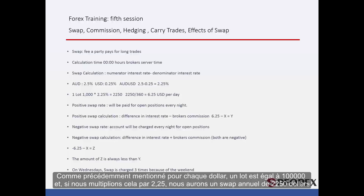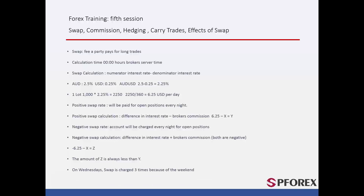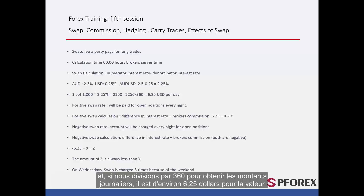As we mentioned before, for every dollar, one lot is equal to 1,000, and if we multiply that by 2.25, we will have an annual swap of $2,250. And if we divide that number by 360 to indicate daily amounts, it is approximately $6.25 of swap interest value that will be withdrawn from or deposited to your account.